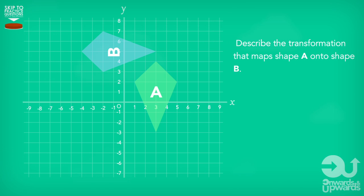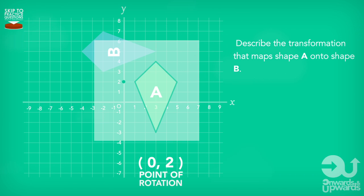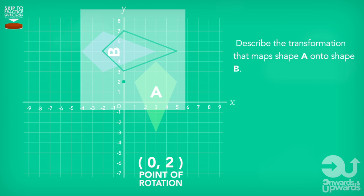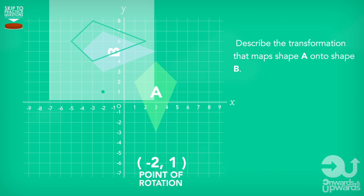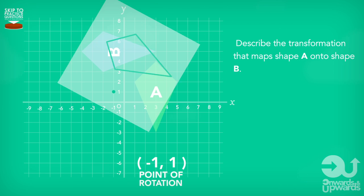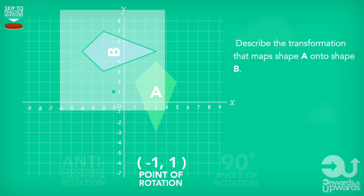First, draw the shape on the tracing paper. Then select a random point that you think should be the point of rotation, and rotate the tracing paper to see if the rotating shape aligns with the second shape. If at first you don't succeed, keep selecting points until the shape on the tracing paper and shape B align together.